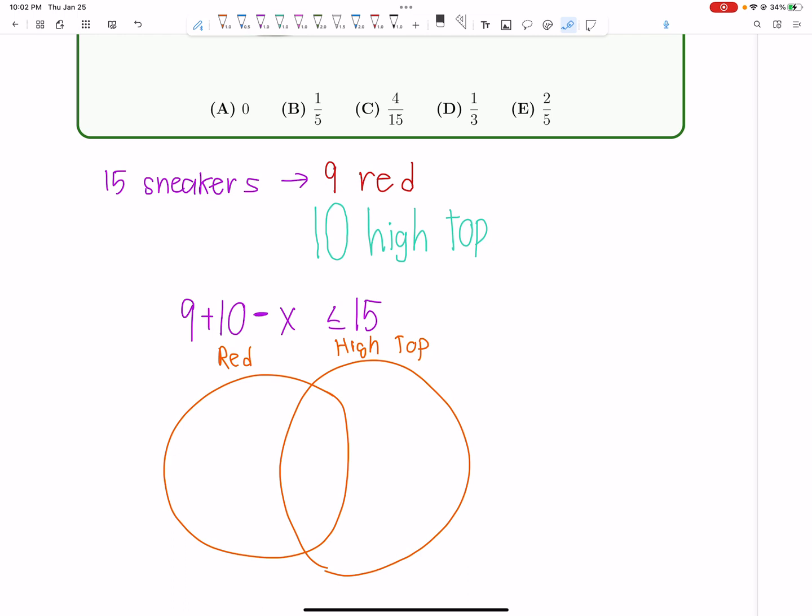But if there's nothing inside here, there's a total of 19 shoes. So if you want to minimize the number of overlap, basically, we can write this inequality, right?